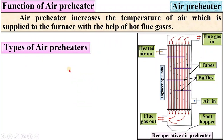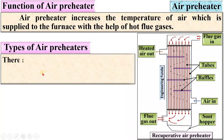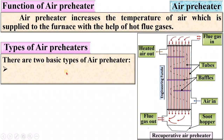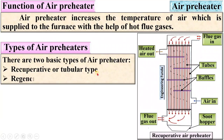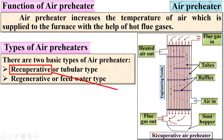The types of air preheaters: there are two basic types. The first one is the recuperative type, sometimes called the tubular type, and the second one is the regenerative or feed water type. Here I have shown a recuperative type air preheater.